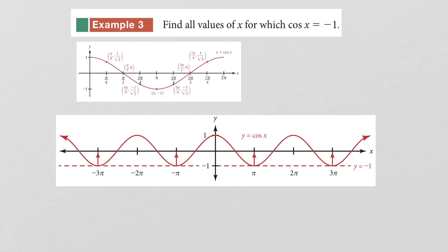A quick example regarding cosine: find all values of x for which cosine of x equals negative 1. Here's our cosine graph. At negative 1, if I draw a horizontal line, between 0 and 2 pi there's only one spot where cosine equals negative 1. However, since the cosine graph repeats itself over and over in both directions, if you draw a horizontal line at negative 1, you can see it touches the curve at many points.